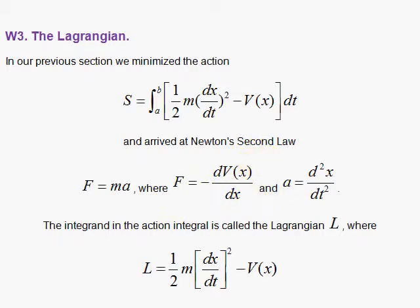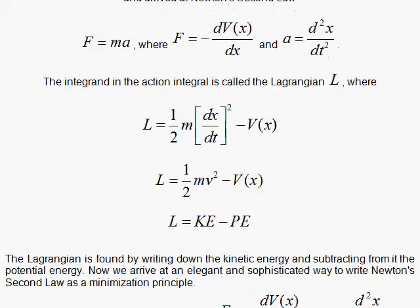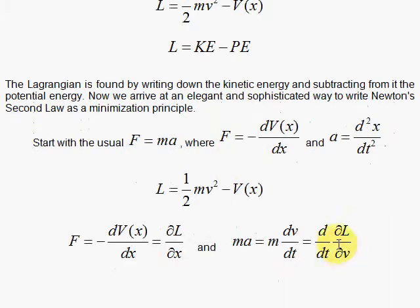So let's look at the Lagrangian, the difference of the kinetic and potential energy. In general here, 1 half mv squared minus V of x, the potential energy, and this is in one dimension. We want to see how we can write Newton's law in terms of derivatives of this L.